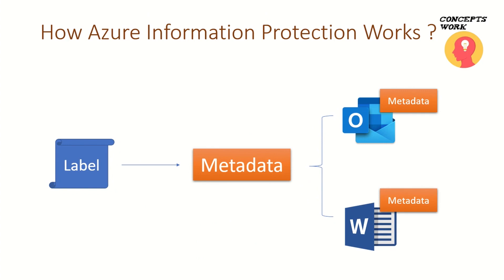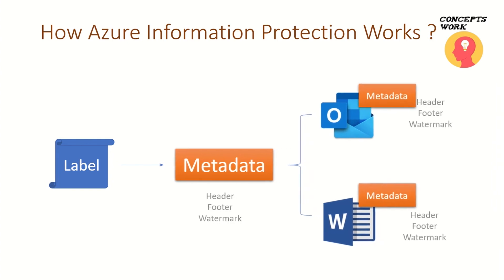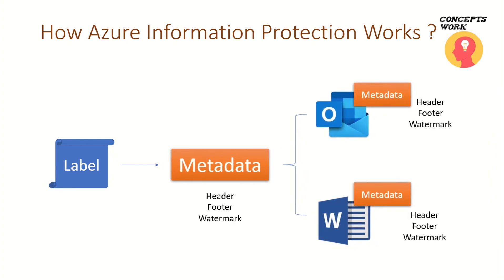Now the question is: where exactly is all this configuration done, or how does my application give me the option to choose a particular classification or label for my document? There are two types of configuration that need to be in place in order to achieve this end goal, wherein headers, footers, and watermarks are applied to documents and emails.